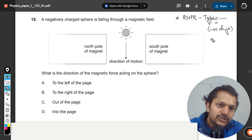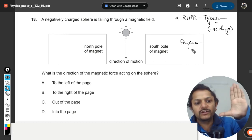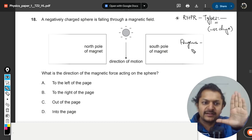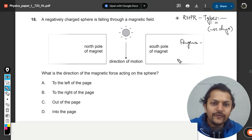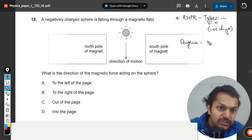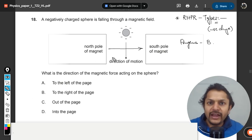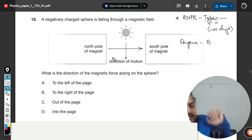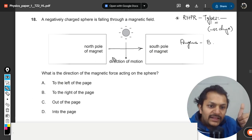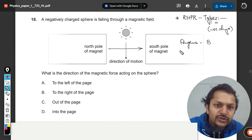We would be using our right hand and keep it hard, it should not be like this but should be like this. Fingers should be pointing in the direction of magnetic field, from north to south. So magnetic field is towards right, so I can keep my fingers like this.